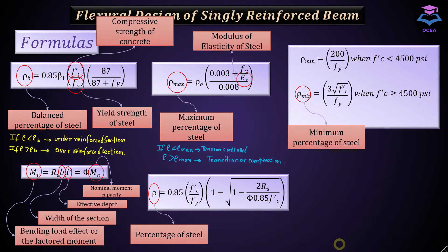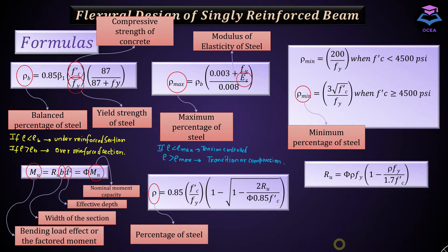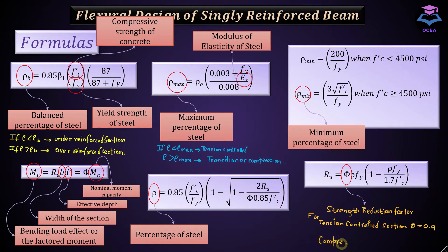The fifth equation gives the value of percentage of steel to be used in the section, and the last equation provides a relation between ru and rho, the percentage of steel. Phi is the strength reduction factor, which is the safety provision provided by the ACI code. It is multiplied by the nominal moment capacity to reduce it by a certain amount to account for variation in dimensions or material properties at the construction site, to reflect the importance of the structure, and the degree of ductility provided by the section. The greater the ductility, the greater the value of phi. For a tension-controlled section, phi equals 0.9; for compression-controlled, phi equals 0.65; and for the transition region, it lies between these two values.